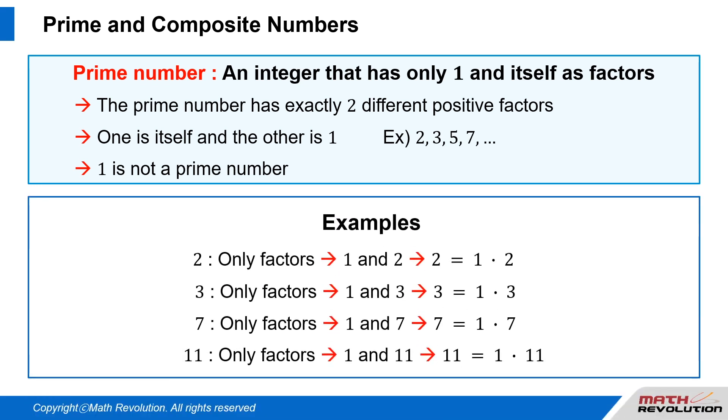For example, two: only factors are one and two, as 2 equals 1 times 2. Three: only factors are one and three, as 3 equals 1 times 3.